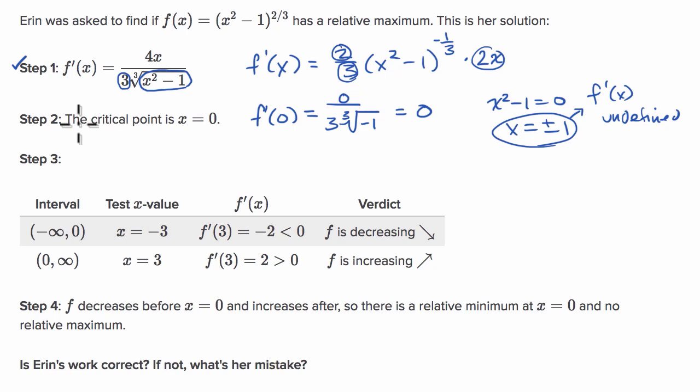So I'm not feeling good about step two. It is true that a critical point is x equals zero, but it is not the only critical point. So I would put that there. And the reason why it's important, you might say, well, what's the harm in not noticing these other critical points? She identified one. Maybe this is the relative maximum point.